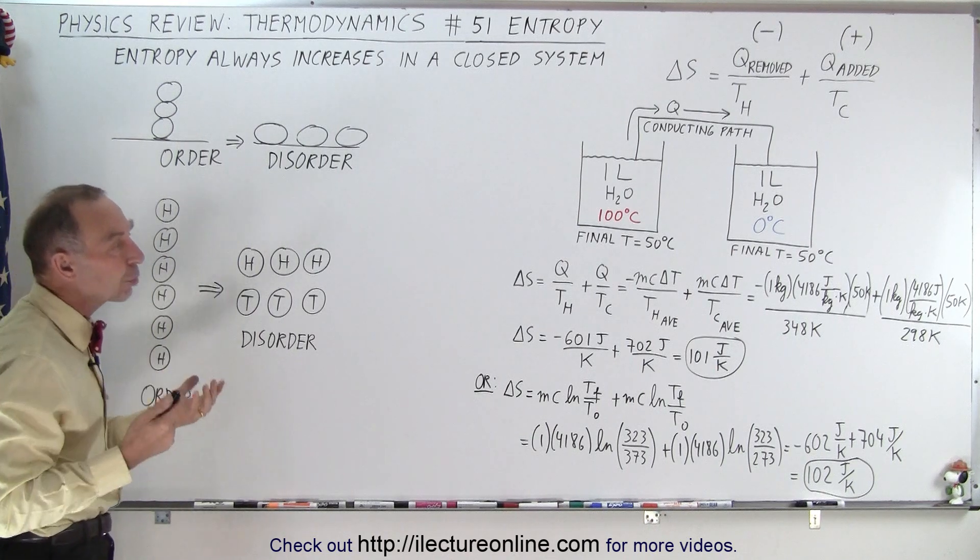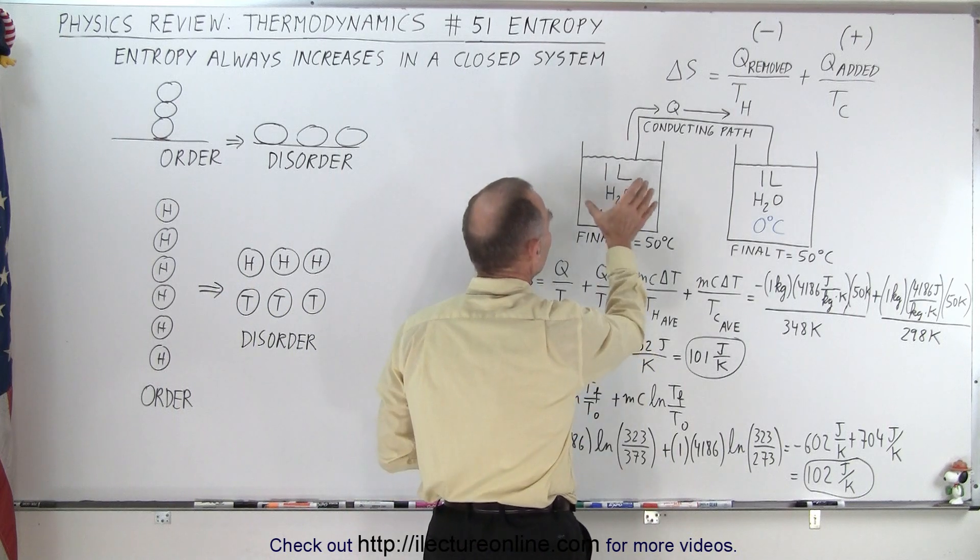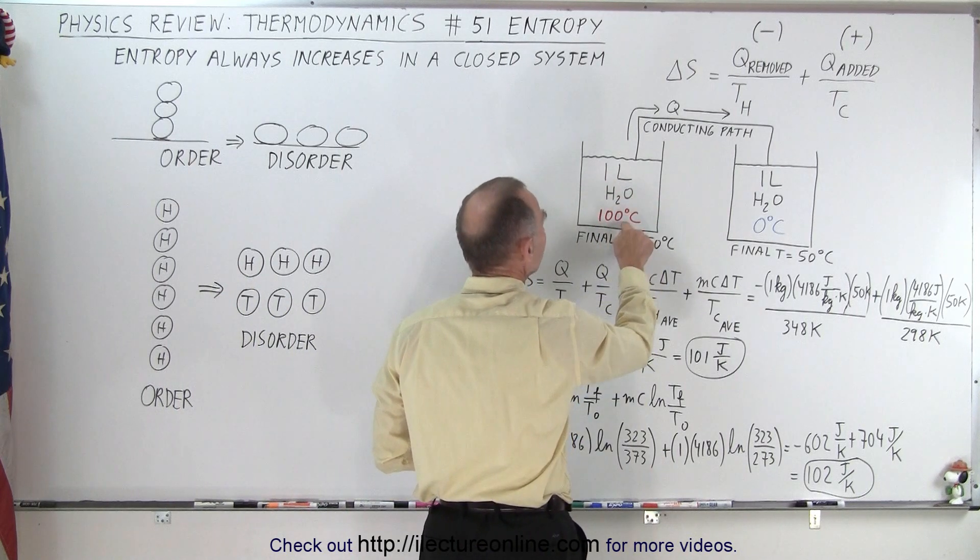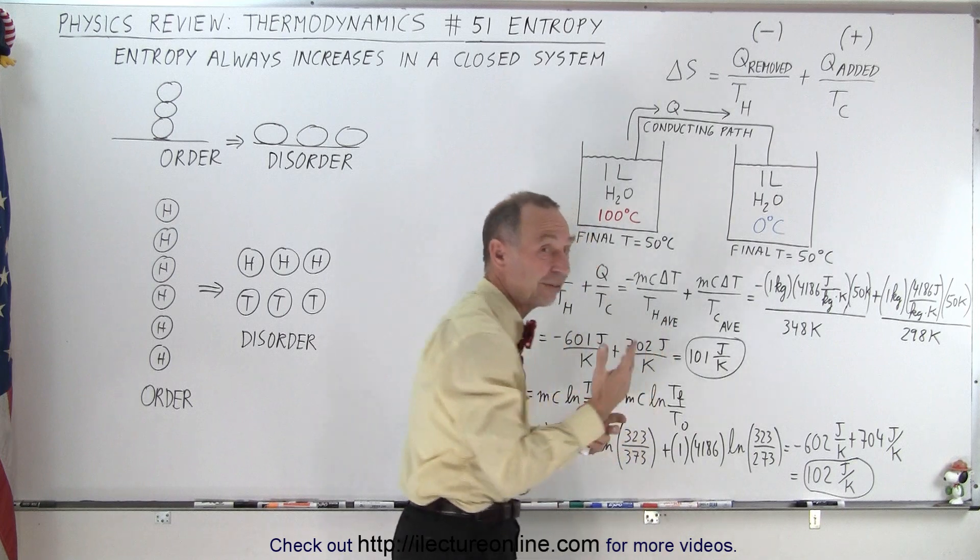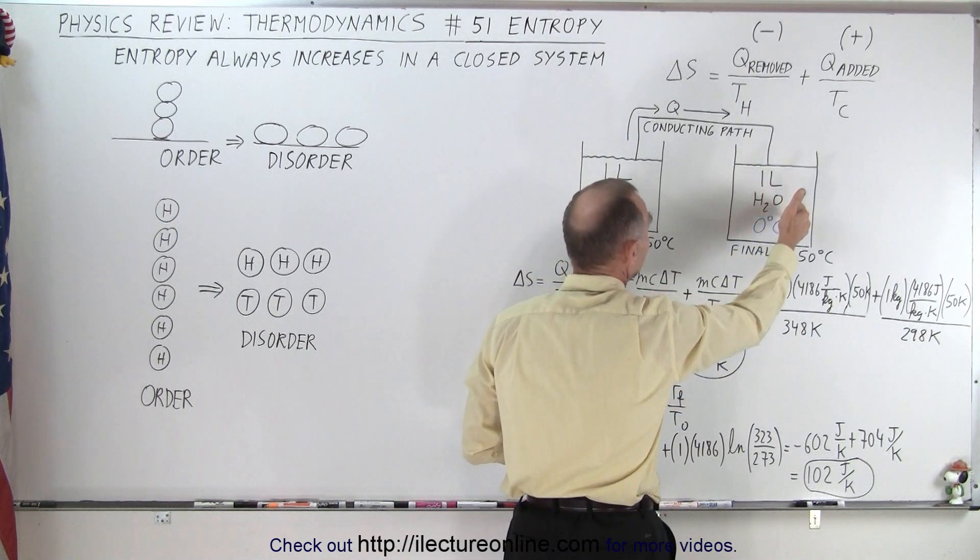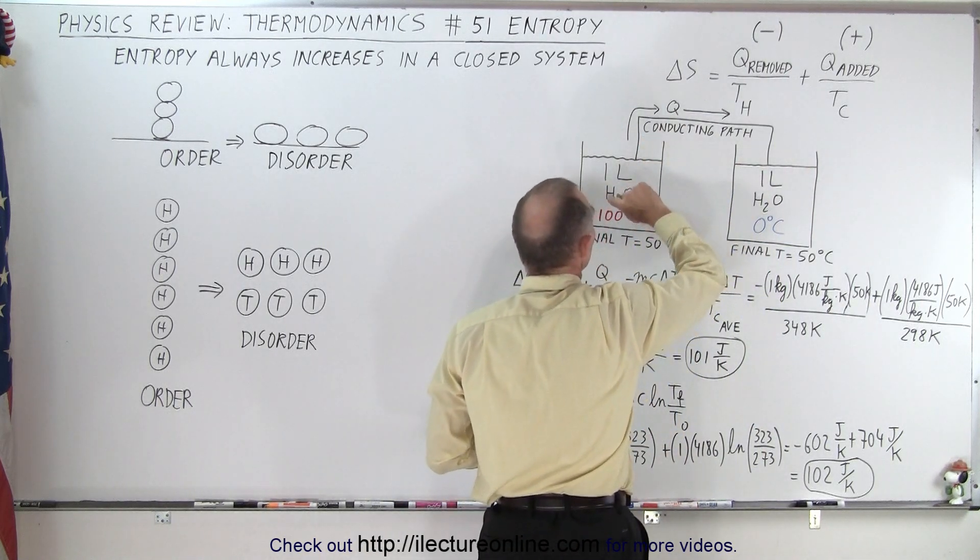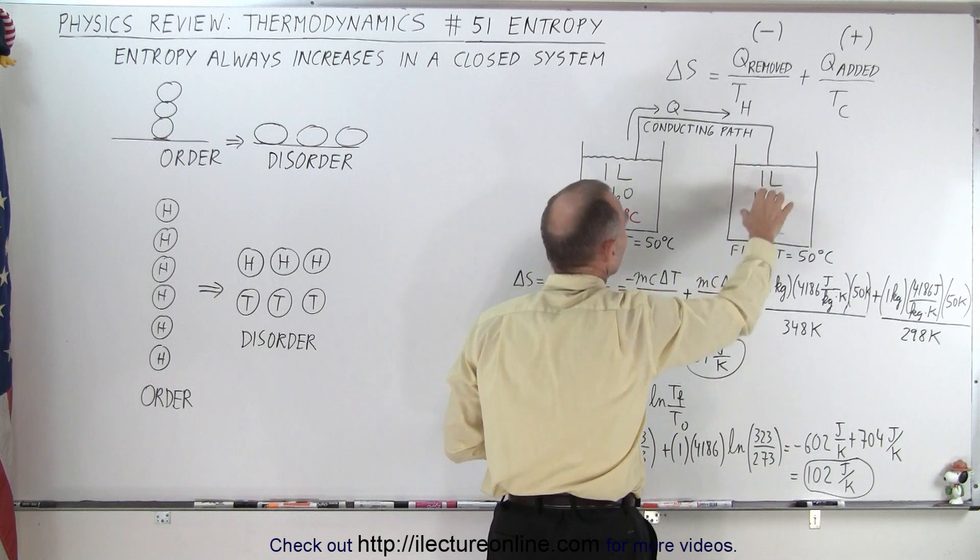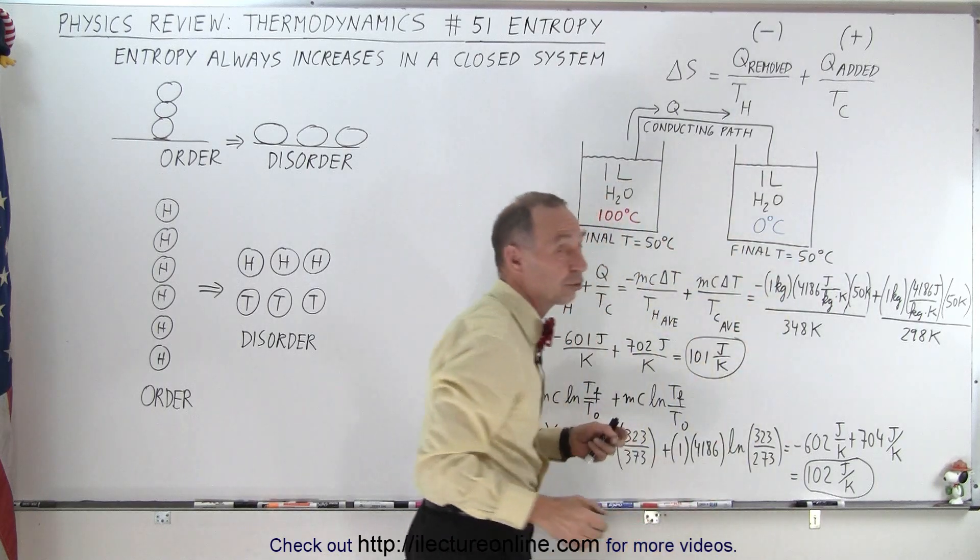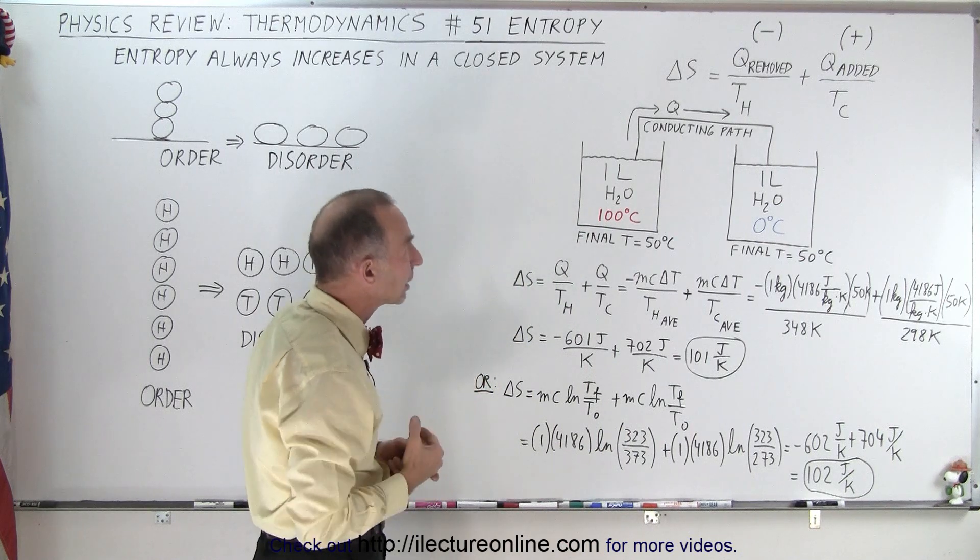But a more practical way of looking at entropy would be in the exchange of heat. Let's say we have a container with one liter of water at 100 degrees Celsius, which is 373 Kelvin, and another container with one liter of water at 0 degrees Celsius. Now we provide a conducting path such that heat will travel from where it's hot to where it's cold until they're both at the same temperature, which means they're both then at thermal equilibrium.